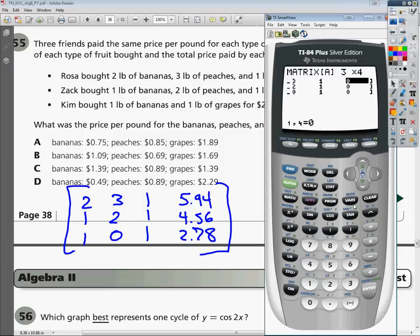The first number is the number of rows and the second number is the number of columns. So I've got 2, 3, 1, and I need to add $5.94. Then I've got 1, 2, 1, and I need to add $4.56. And the last one, I've got 1, 0, 1, and then you add $2.78.